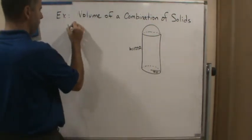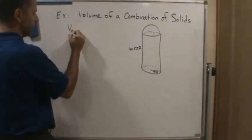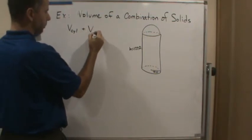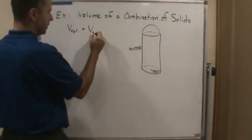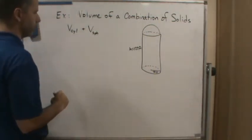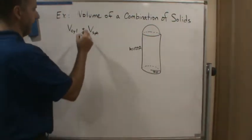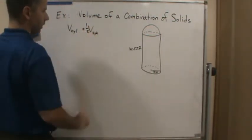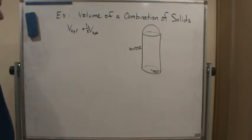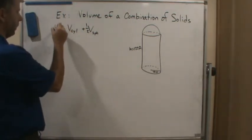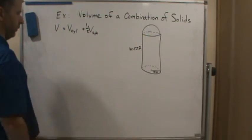So it's going to be the volume of the cylinder plus the volume of the sphere, right? But it's only going to be half of the volume of the sphere. And so this is going to be the whole volume total.